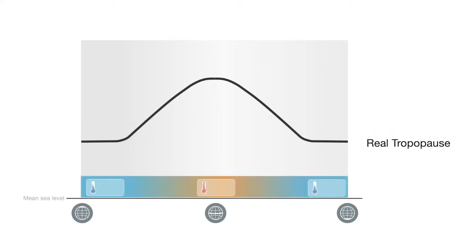At mean sea level, the average pole temperature is about minus 40 degrees C, whereas at the equator it is about plus 30 degrees C.